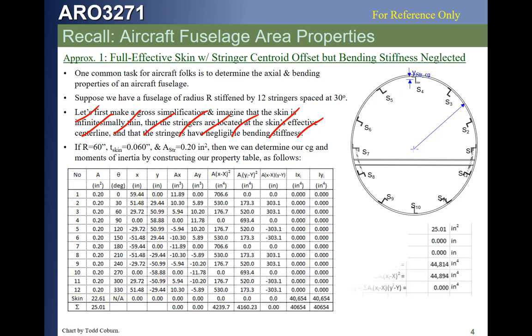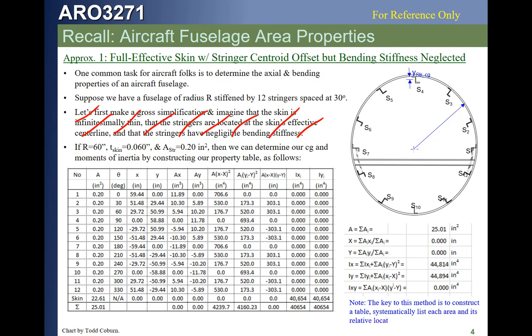With this idealization, the total area is 25 square inches and the moments of inertia are about 44,000 in⁴. Notably, the skin provides 40,000 of the 44,800 in⁴ of moment of inertia. While the stringers have some effect, the skin — if fully effective — has a huge moment of inertia. However, this skin moment of inertia is not realistic, because thin cylindrical shells in compression or bending buckle at relatively low loads, so this does not represent reality even if analytically correct.